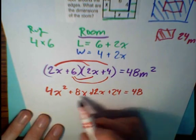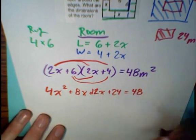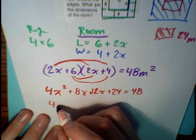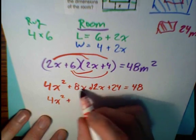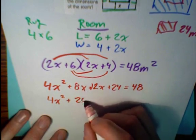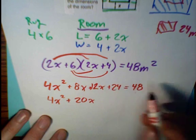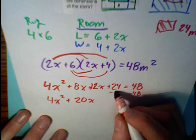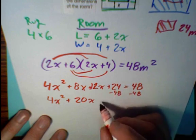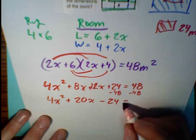Now we have to solve. We'll combine like terms, but we also have to subtract 48 from both sides to get it to equal 0. 4x squared plus 8x plus 12x is 20x. And here I'm just going to do another step. I'm going to subtract 48 from both sides. This is going to give me a negative 24 equals 0.